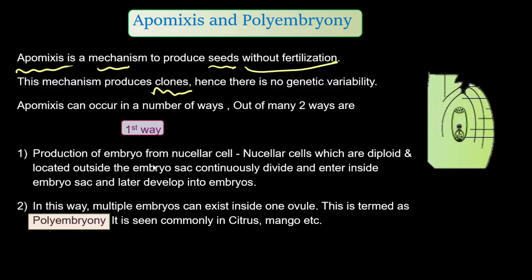There is no genetic variability; the genetic composition of parent and offspring will be the same. That is why we call them clones — the genetic composition between individuals will also be the same. Normally clones are produced in asexual reproduction, but here clones are formed through apomixis.